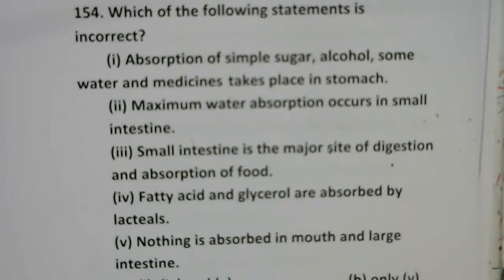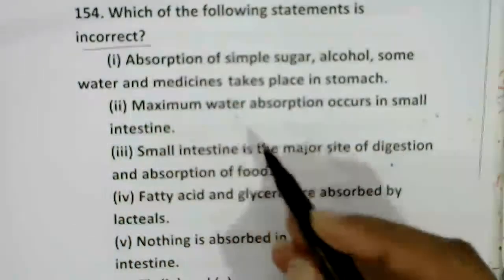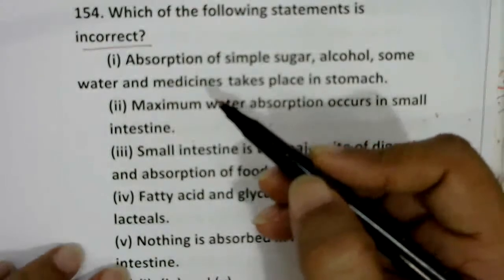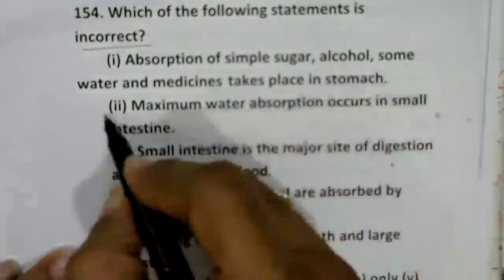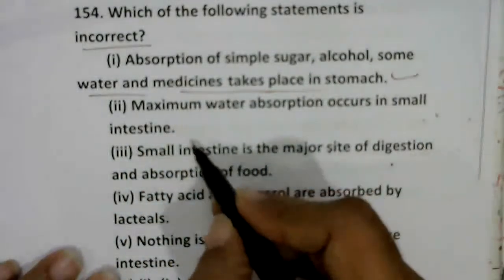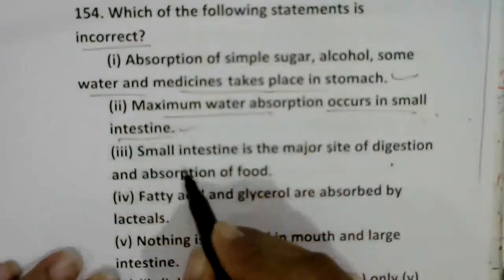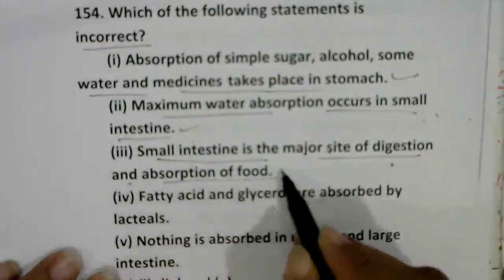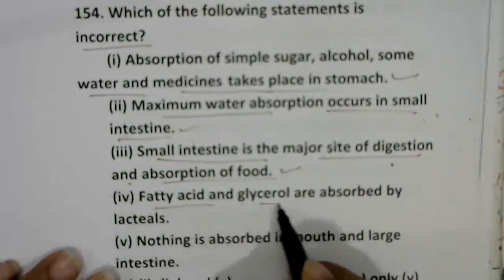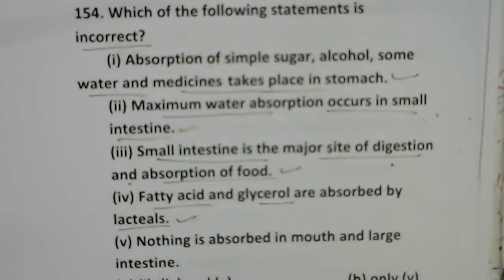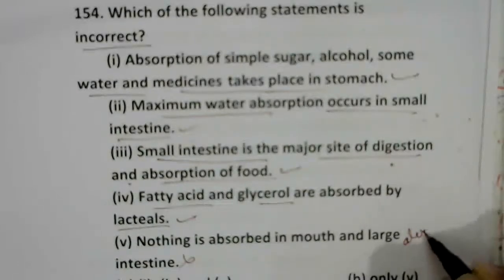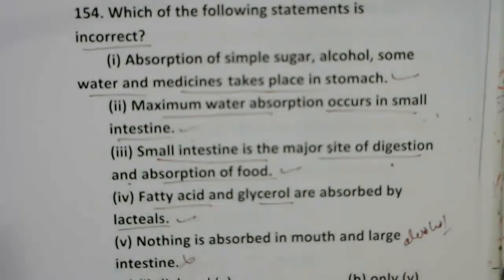Select the incorrect statement. Absorption of simple sugar, alcohol, some water, and medicines takes place in the stomach — correct. Maximum water absorption occurs in the small intestine — correct. Fatty acids and glycerol are absorbed by lacteals of villi — correct. Nothing is absorbed in mouth and large intestine — wrong, because alcohol and some sugar and salts are absorbed in the mouth. Option B (fifth one) is wrong.